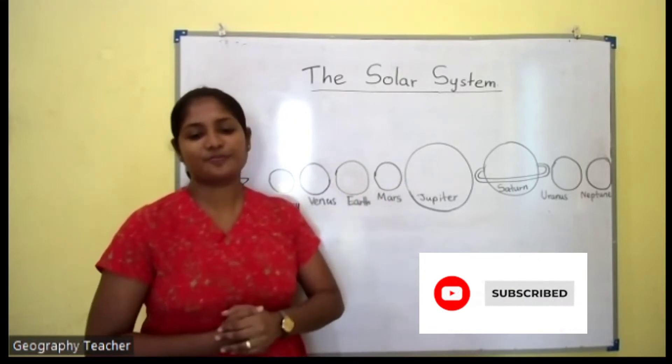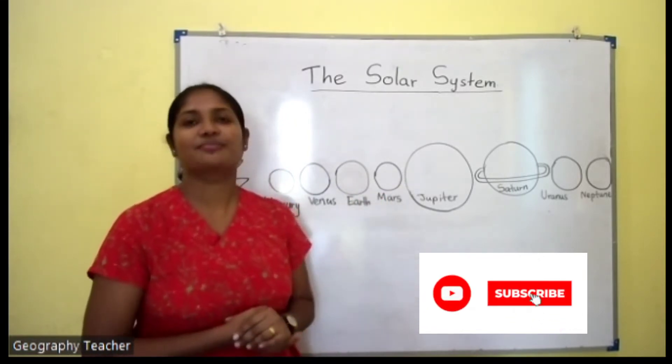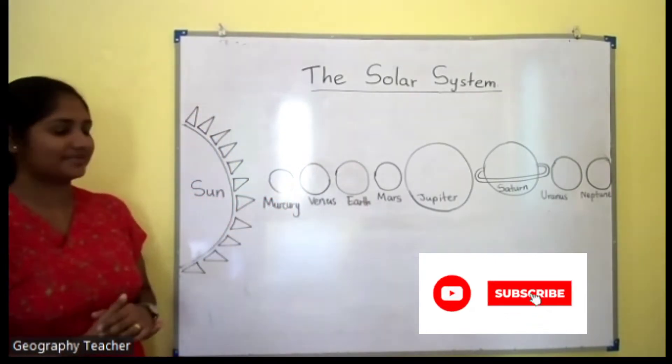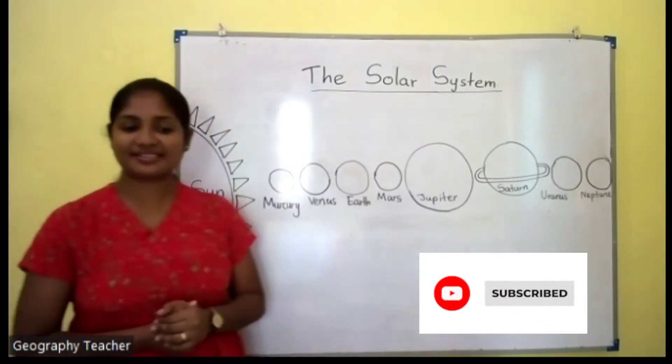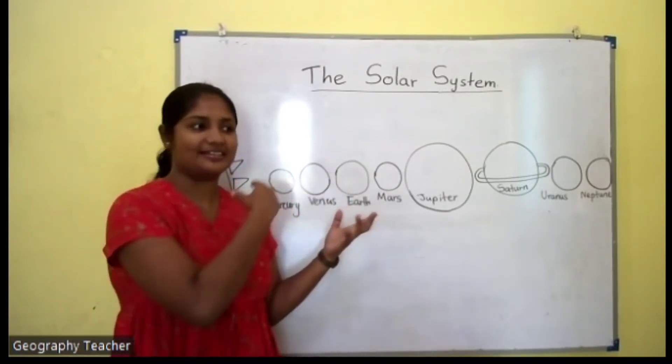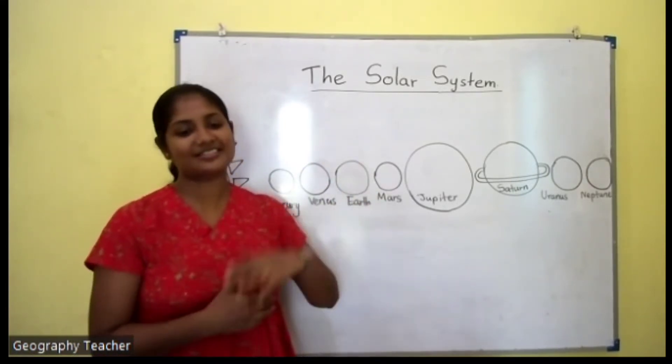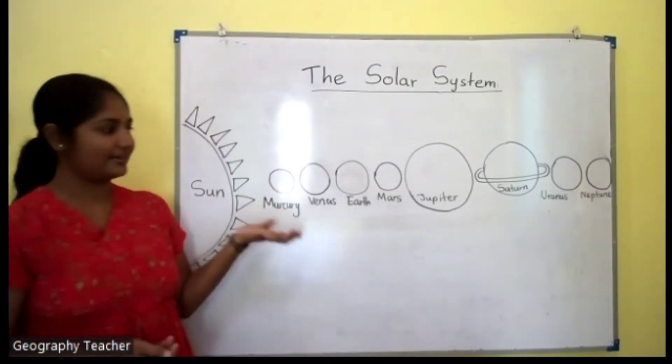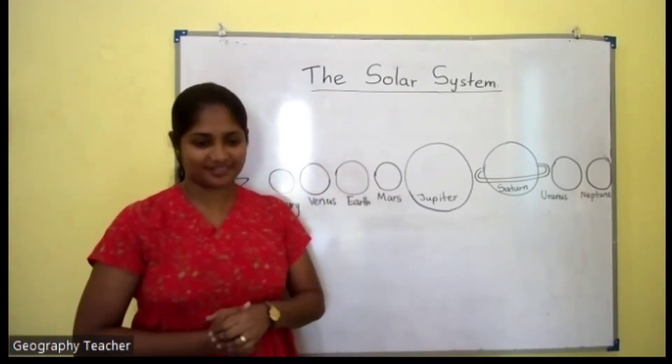Our Earth also belongs to a solar system. In our solar system, the sun is the main star that provides heat and light to all these planets. You know that there are eight planets in our solar system.